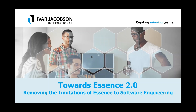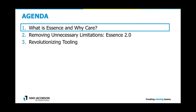The topic is Essence 2.0, and it basically is about removing limitations of Essence to software engineering. Today, it's formally limited to software engineering. Stefan Malisch will later talk about how we remove the unnecessary limitations. And then Simon will talk about the new tooling, which actually revolutionizes the industry.